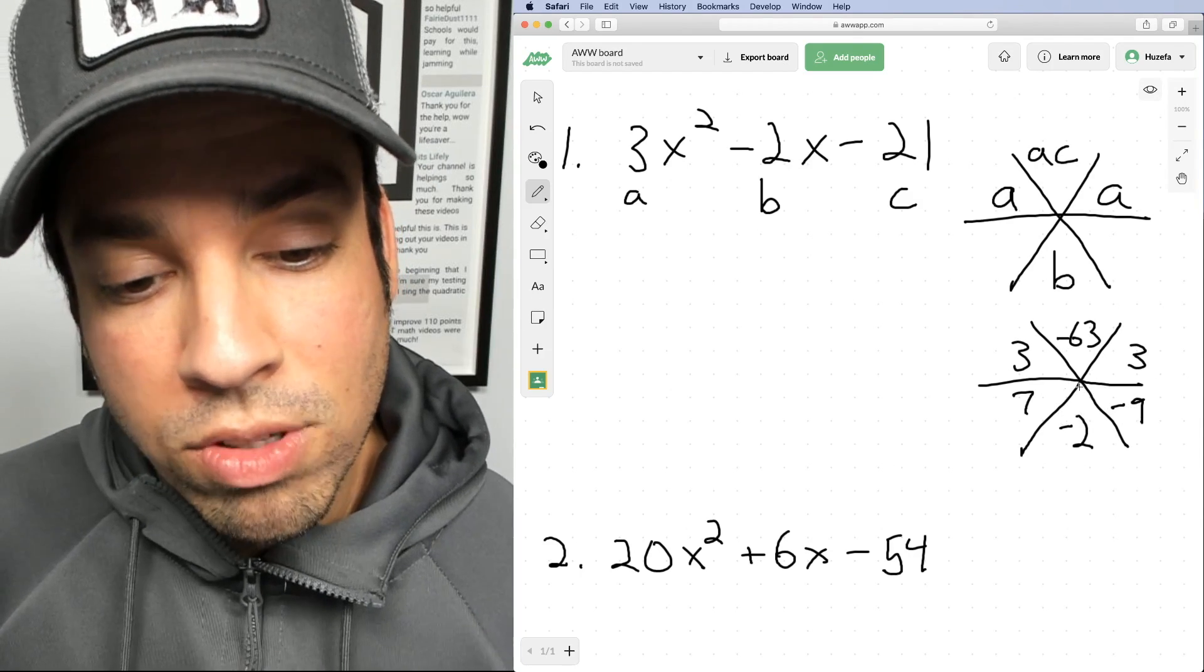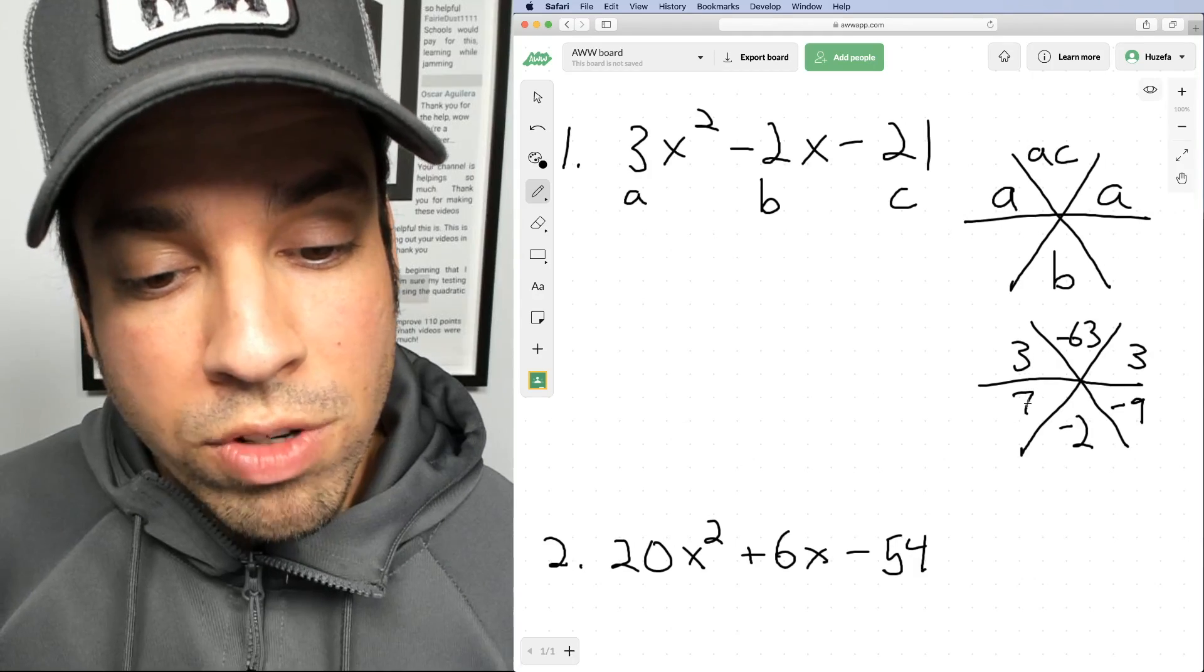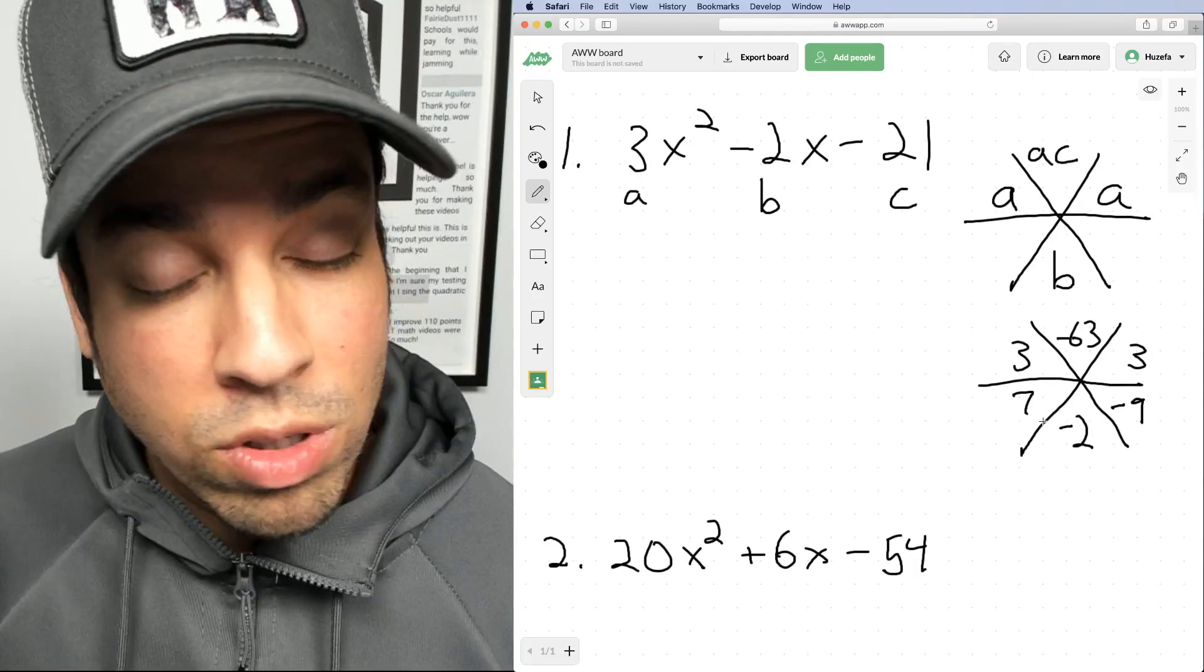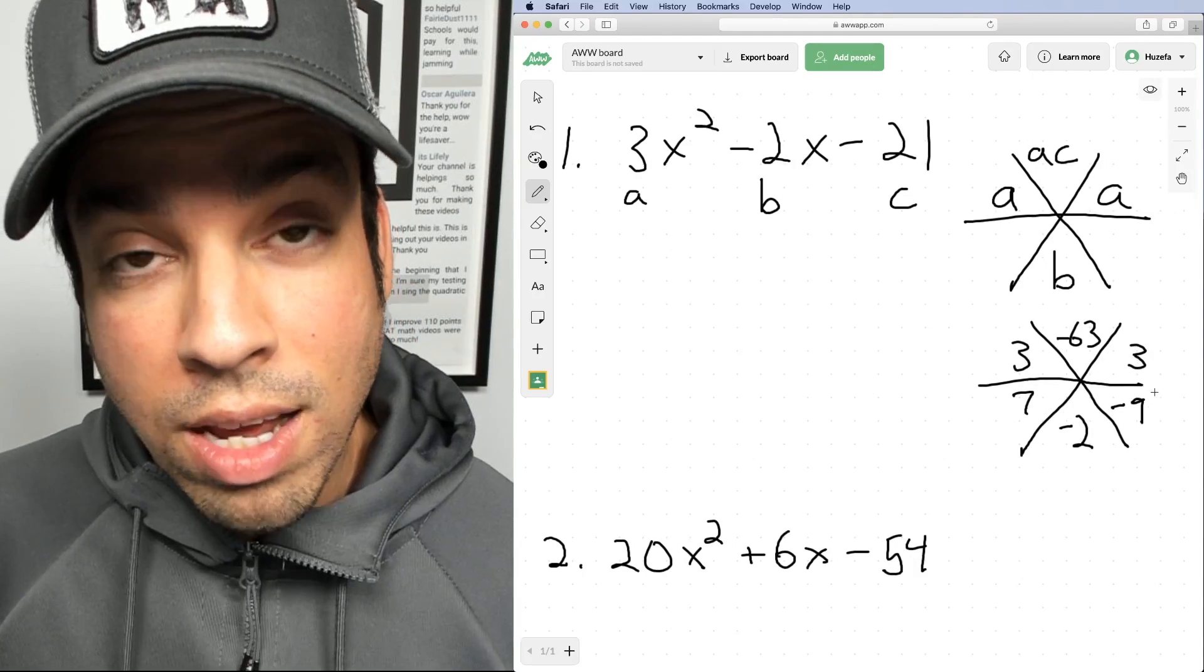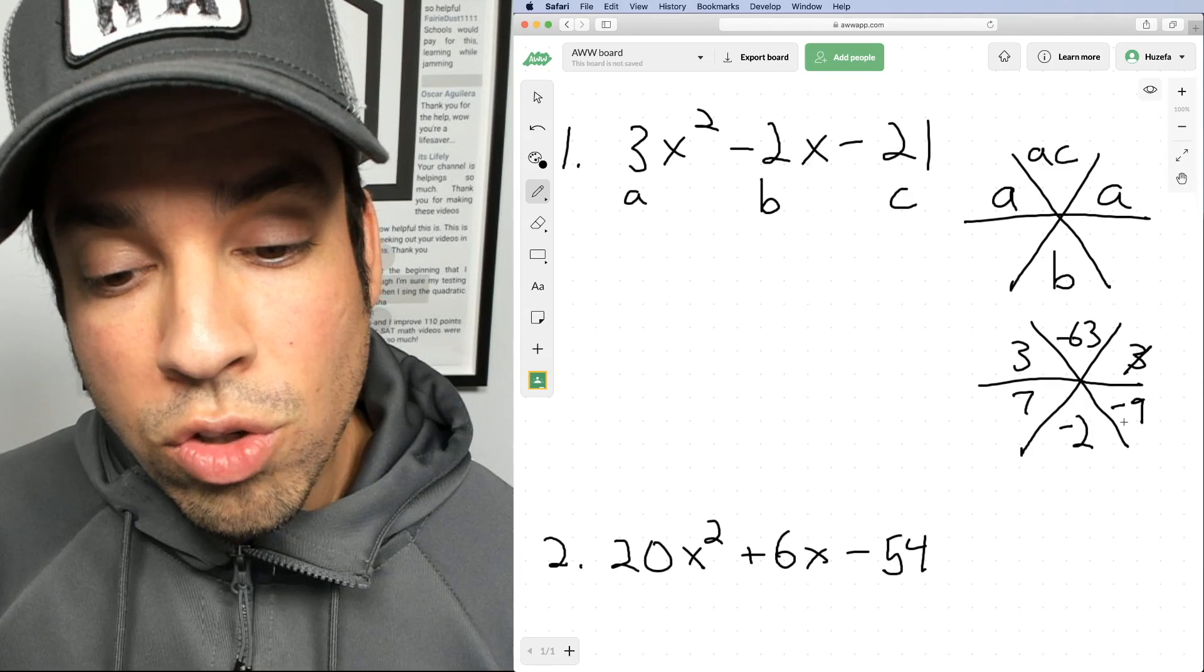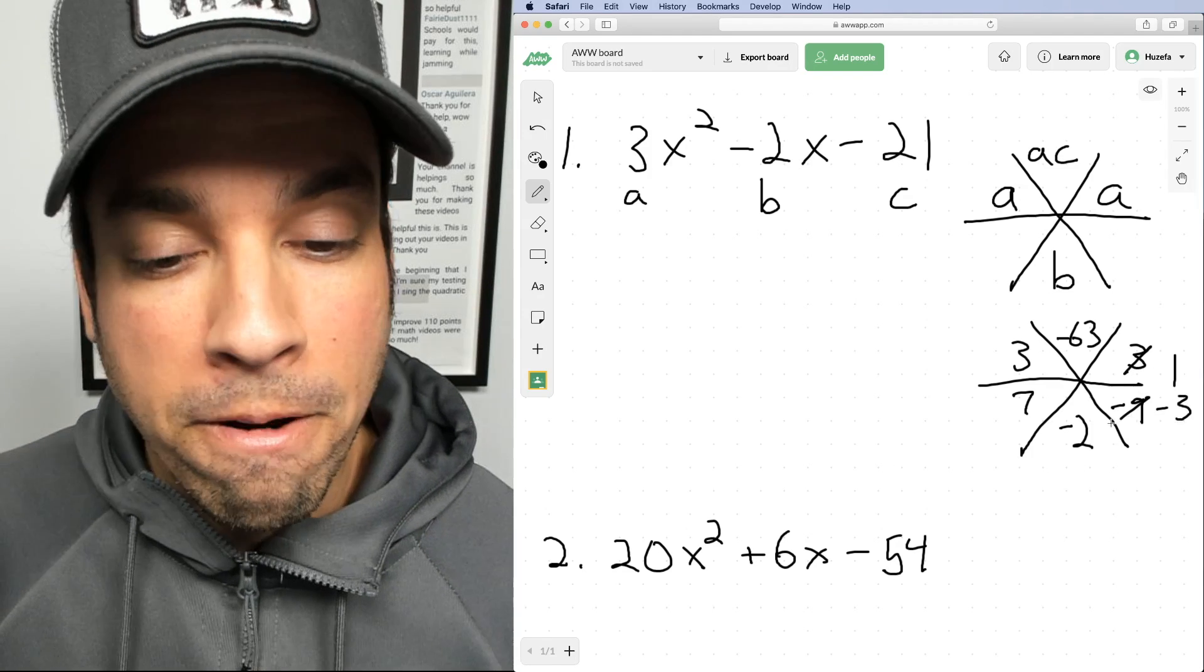Now the next step after this is we look at these almost like fractions. Three over seven is three sevenths, cannot be reduced. Okay, cool. What about three over negative nine? That can be reduced to one over negative three.